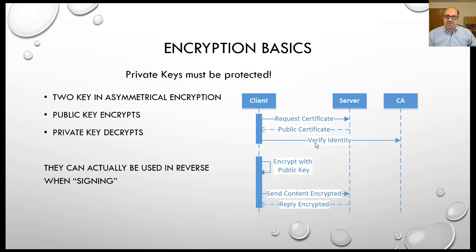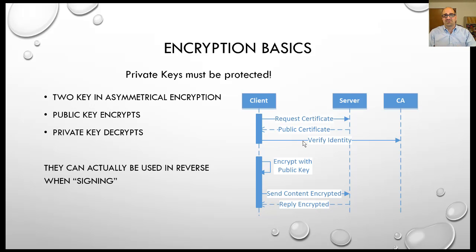At a high level, the client connects to the server and says, what's your public certificate? When it gets the public certificate back from the server — and the public certificate actually contains the public encryption key — it will go out to the CA, which I'll talk about later, and verify that the certificate is actually valid. If that certificate authority tells you the certificate is valid, hasn't expired, hasn't been stolen, and was actually issued by that entity, then the client will encrypt data with that public key.